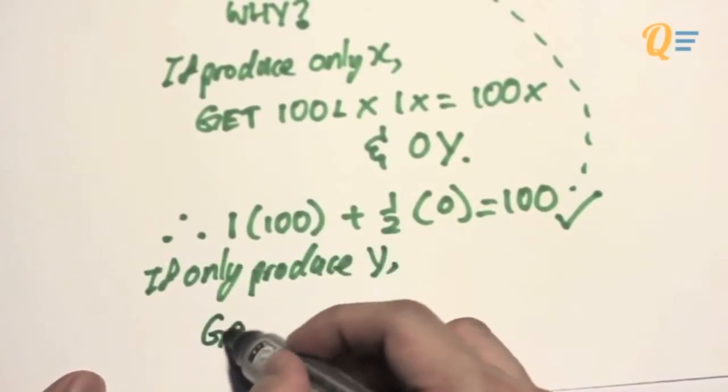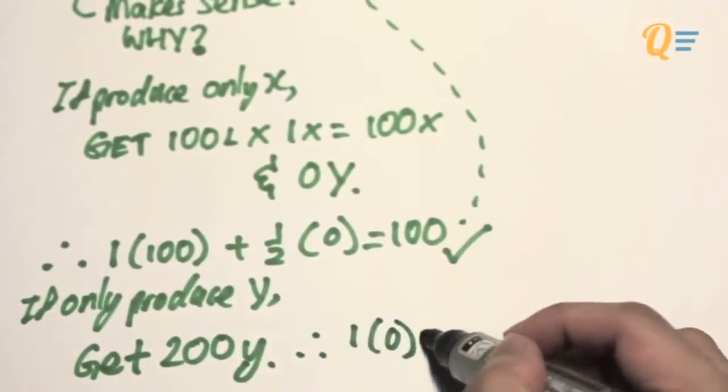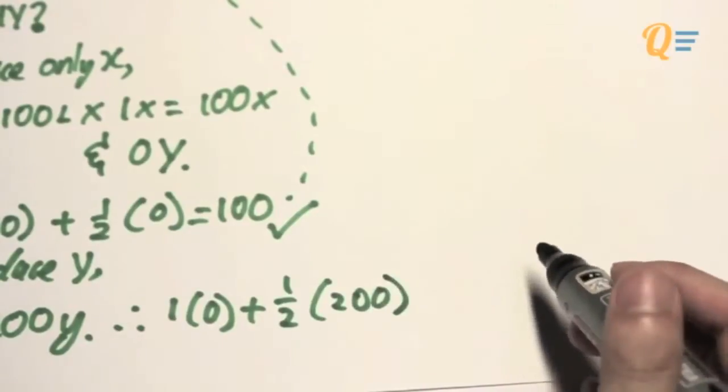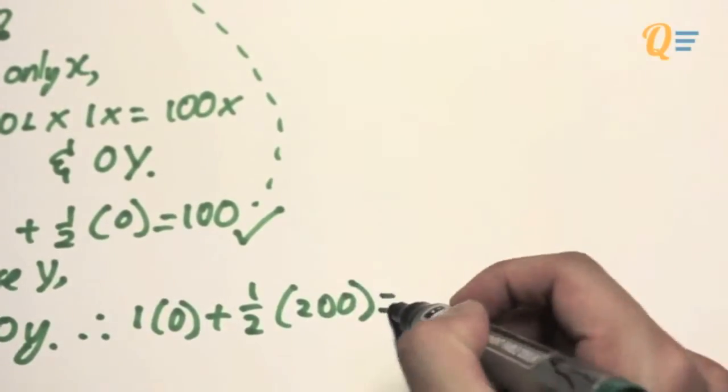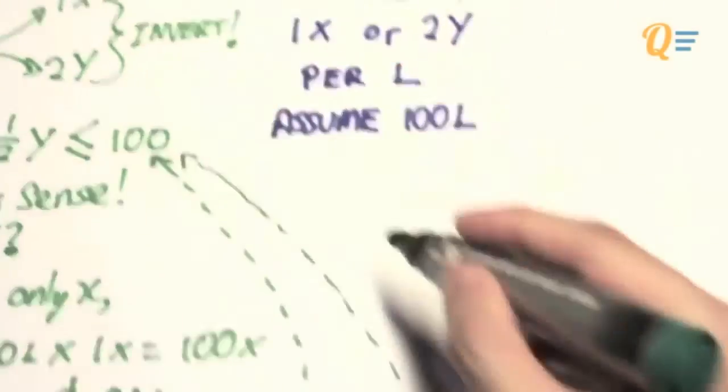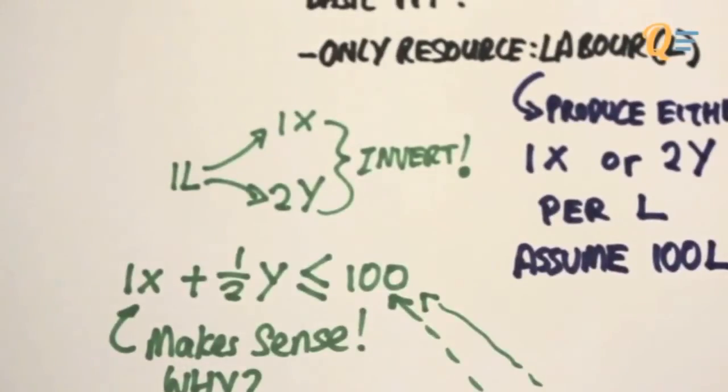If we're going to produce only Y, we're going to get 200Y because it's 100 times 2, and 0X. I'm going to plug these figures, 0 and 200, into the equation as well. I'm going to get, again, 100. Given that we maximize our resources, this equation makes sense. It equals whatever we had here.